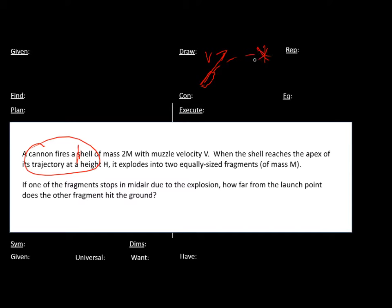That shell is going to explode when it gets to the top of its trajectory. So it's going to have an initial muzzle velocity, explosion here at the top at some height H. And what do we want to find? We want to figure out how far one of these fragments goes before it hits the ground, some distance D, when this other fragment just stops in mid-air because of the explosion.